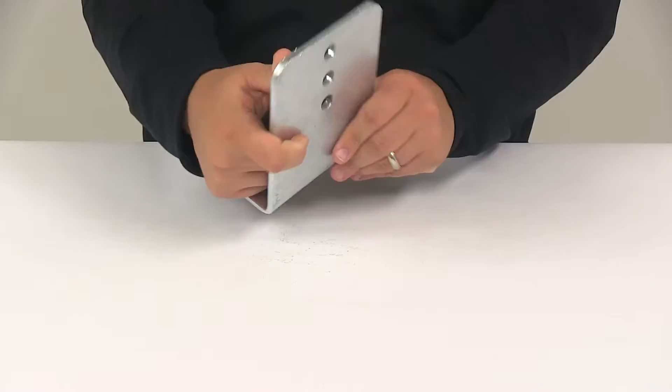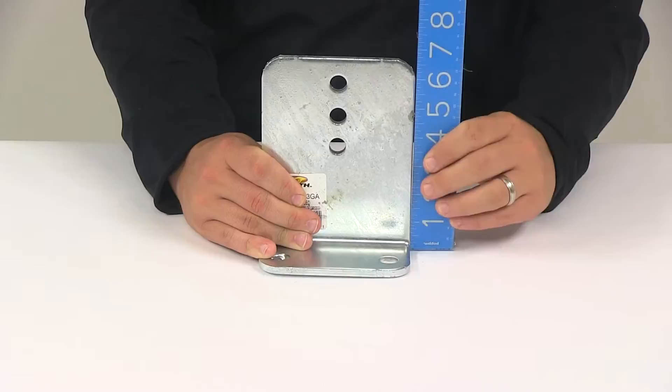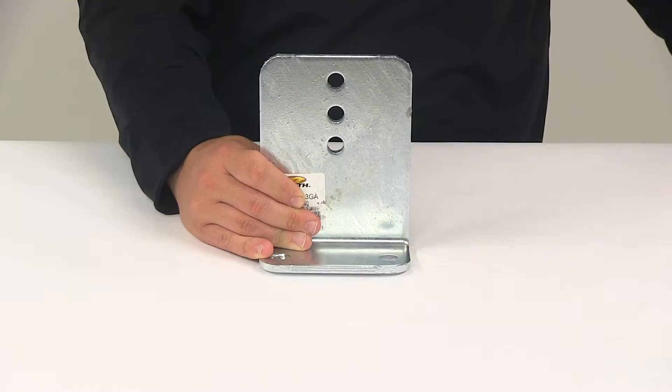A few measurements to go over real quick, starting with the overall width, going edge to edge this direction. It's going to be about five inches wide. The overall height, that's going to give us a measurement of about six and three quarters of an inch tall.